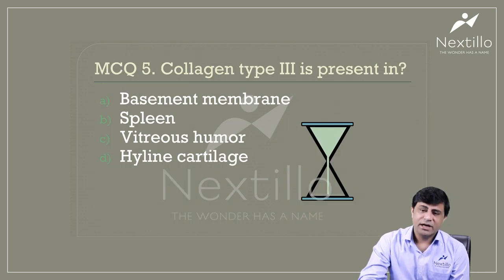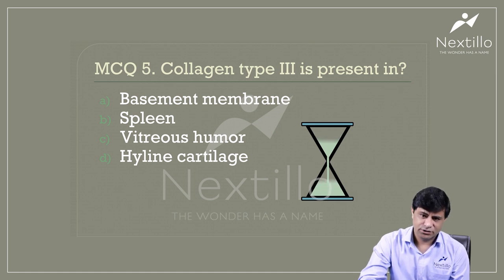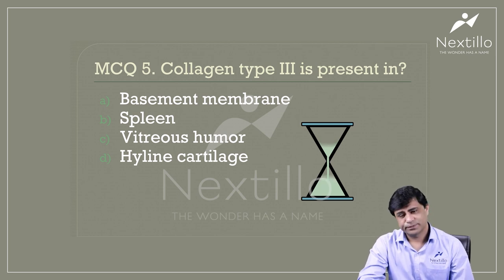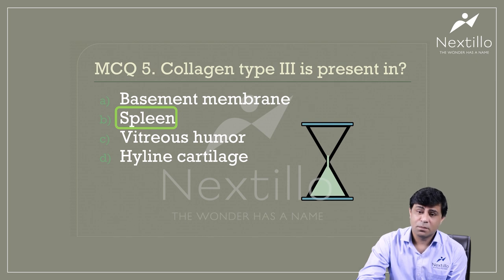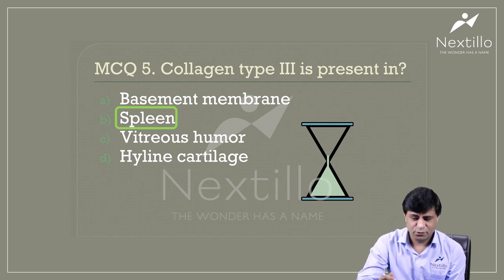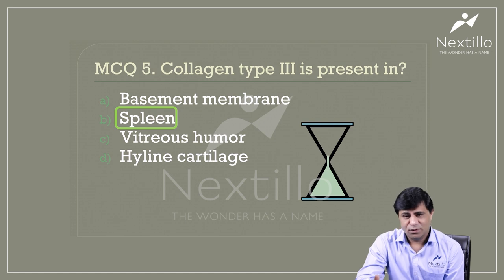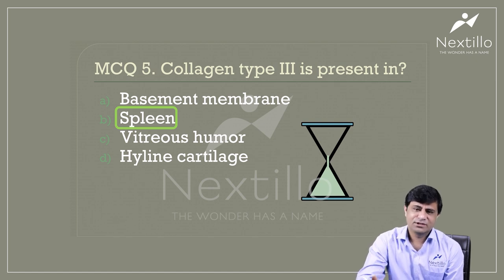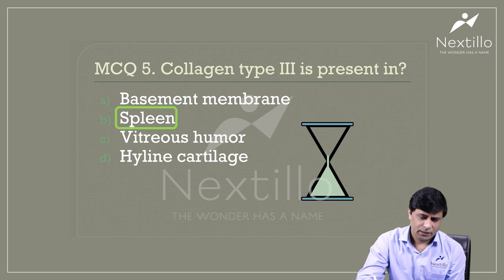Now a question: collagen type 3 is present in the basement membrane, spleen, or hyaline cartilage? Think about the types of collagen. The answer is spleen. Collagen has been divided into various subtypes according to the thickness of fibers — the thickest is type 1, then type 2, then type 3, then type 4. Remember type 3 collagen is also called reticular fibers.